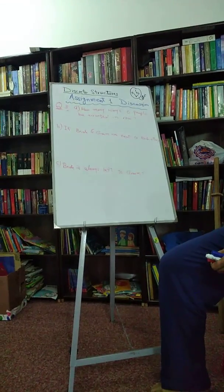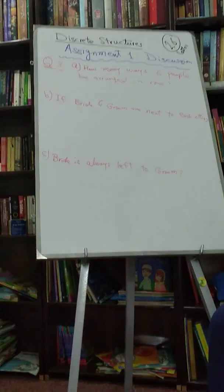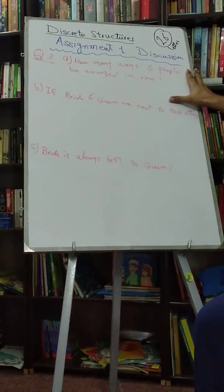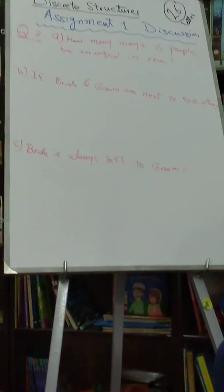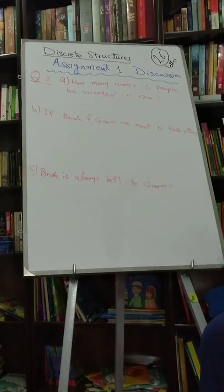So let's go with question number three. In how many ways can a photographer arrange six people in a row? It's exactly the same problem as seating arrangement. In how many ways can six people sit down?